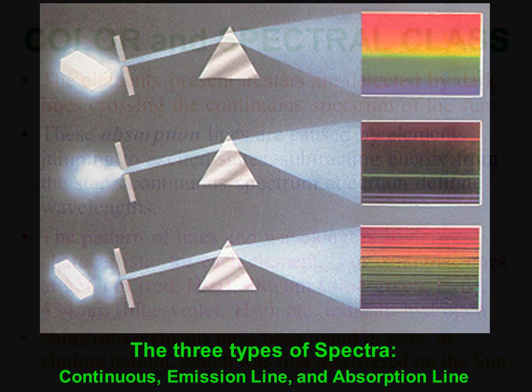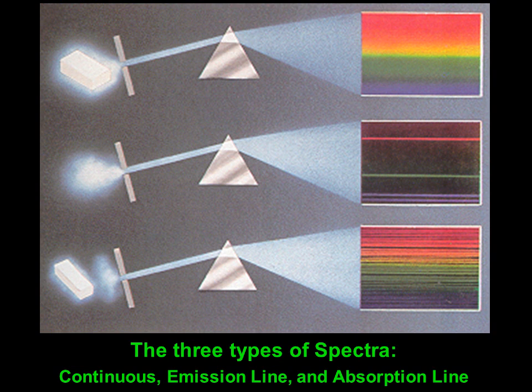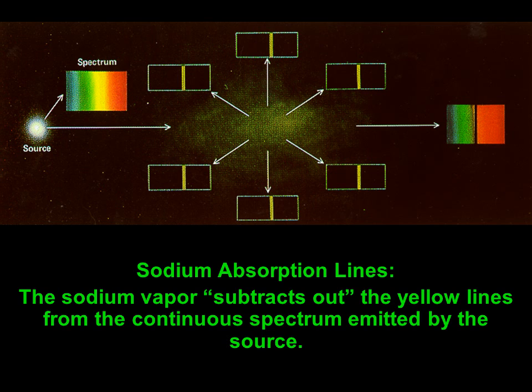There are three types of spectrum: at the top, the continuous spectrum; in the middle, the emission lines; and third, the absorption lines. On the left you see the continuous spectrum from the source, and when it encounters sodium vapor in transmission, the sodium vapor subtracts out the yellow lines from the continuous spectrum — producing dark absorption lines at those wavelengths.